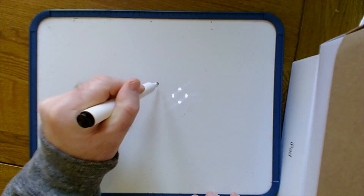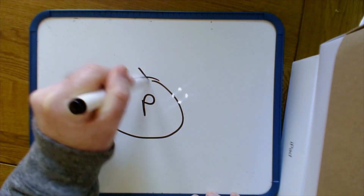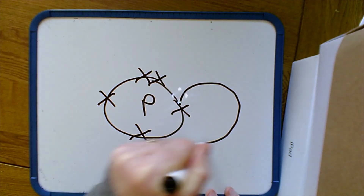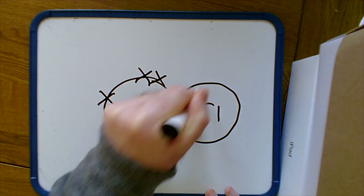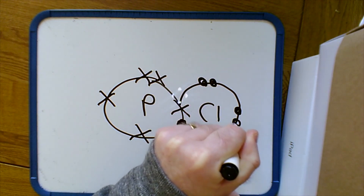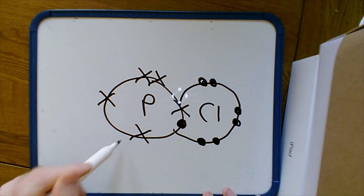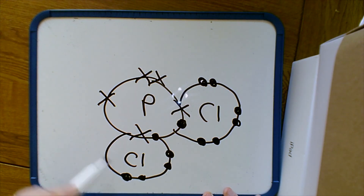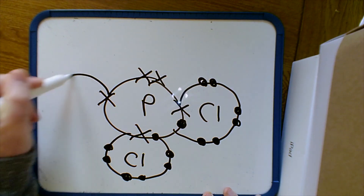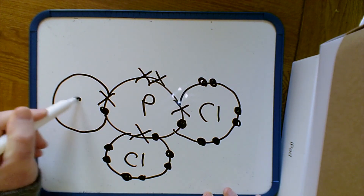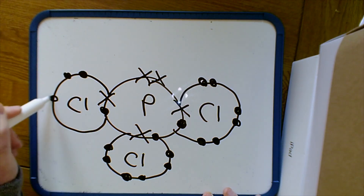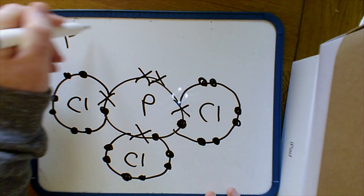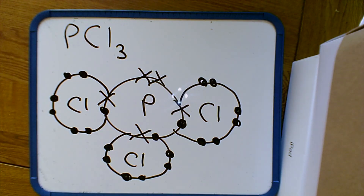For phosphorus trichloride, phosphorus is the central atom with electron arrangement 2,8,5 — five electrons in the outer shell. Put in the electrons; done correctly you should have three unpaired electrons. Place chlorine atoms around it, remembering that chlorine has seven electrons in the outer shell, so add six more electrons for each chlorine. When drawn correctly, both chlorine and phosphorus have full outer shells, giving three single covalent bonds — each sharing one pair of electrons.